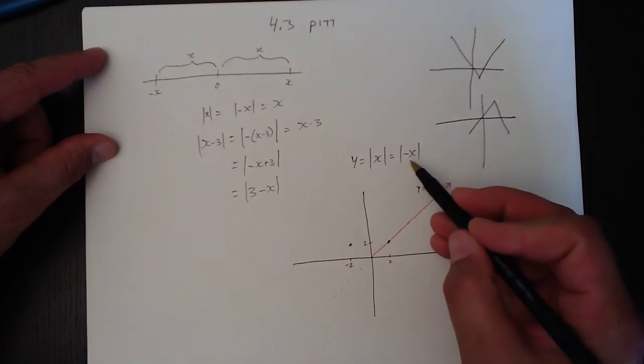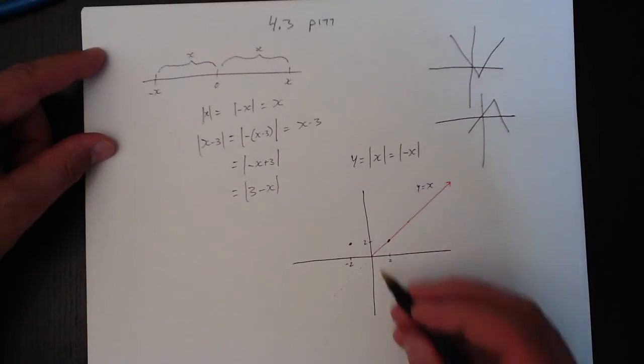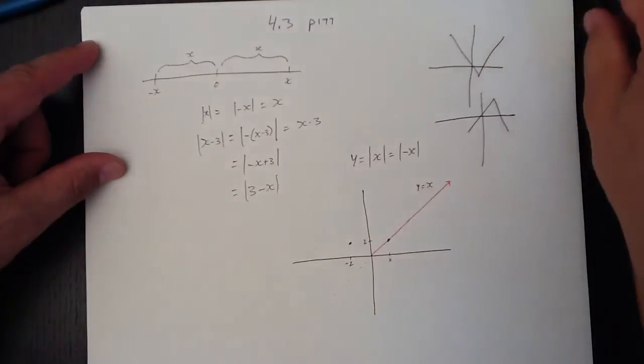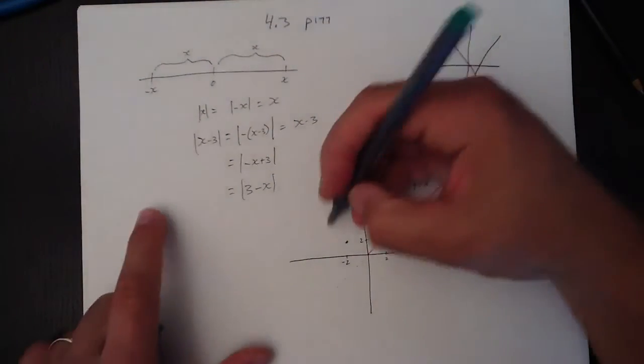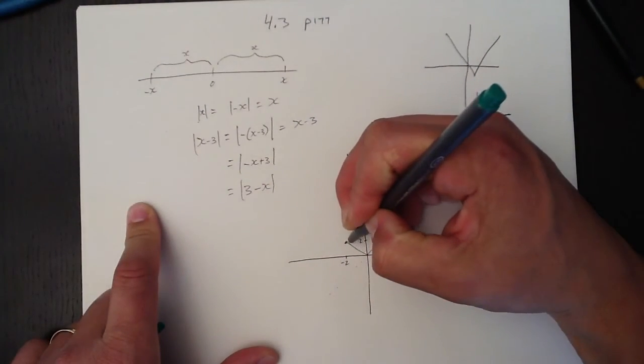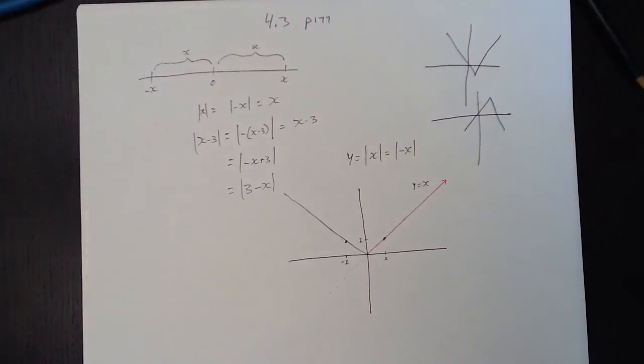So, if x equals negative 2, the absolute value is still y. So, we will find that there will be a line on the other side. Let's see if I can find another color here. There's green.